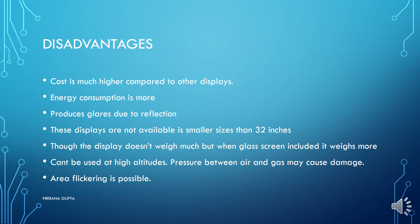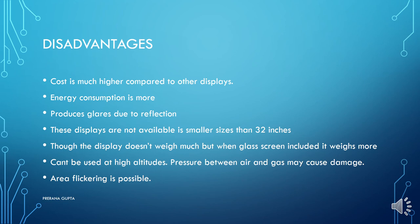Disadvantages: cost is much higher compared to other displays. Energy consumption is more. Produces glare due to reflection. These displays are not available in smaller size than 32 inches. 32 inch size is the minimum size; we get bigger than this. Though the plasma doesn't weigh much, when glass screen is included it weighs more. Cannot be used at higher altitudes because pressure between air and gas may cause damage. Area flickering is possible.